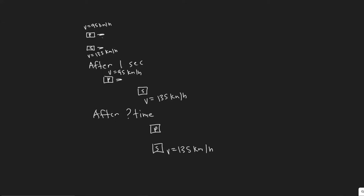In this problem, we're told an unmarked police car traveling a constant 95 kilometers per hour is passed by a speeder traveling 135 kilometers per hour. Precisely one second after the speeder passes, the police car steps on the accelerator. If the police car's acceleration is two meters per second squared, how much time passes before the police car overtakes the speeder, assumed to be moving at a constant speed?